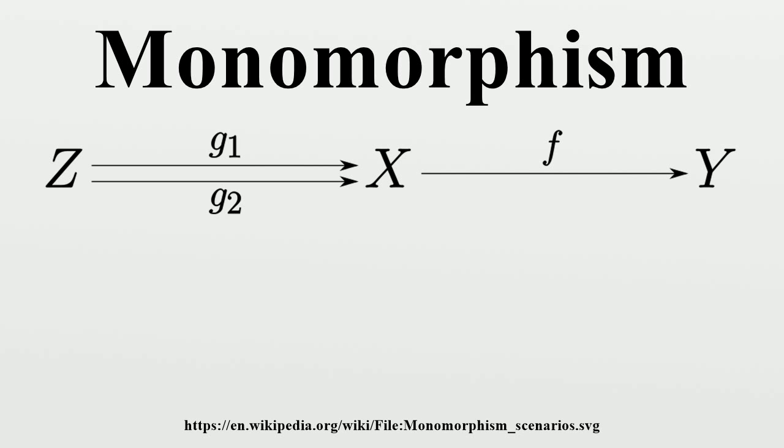Precisely, if m = g∘e with e an epimorphism, then e is an isomorphism. A strong monomorphism satisfies a certain lifting property with respect to commutative squares involving an epimorphism.